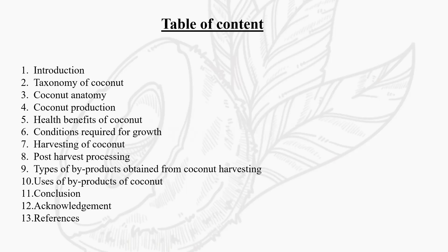The table of contents comprises of introduction, coconut's taxonomy, its anatomy, its production, health benefits, conditions required for growth, harvesting of coconut, post-harvest processing, types of by-products and uses, which is followed by conclusion, acknowledgement and references.